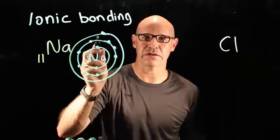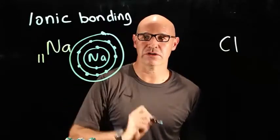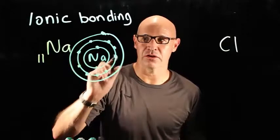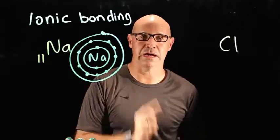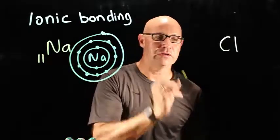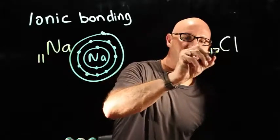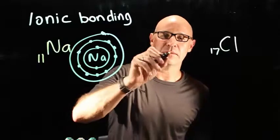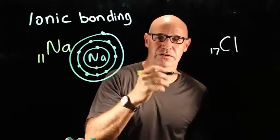It has a tendency to want to donate one electron and become a cation with a 1 plus charge. Let's have a look at chlorine. It has got an atomic number of 17. So that means it's got 17 protons, 17 electrons.